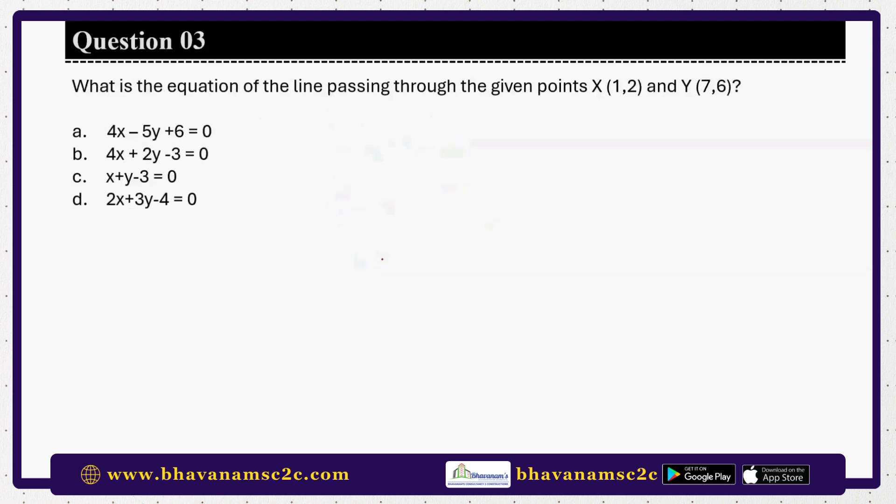Let's go to question number three. What is the equation of the line passing through the given points X, that is 1 comma 2, and Y, 7 comma 6? I will give you a tip for this question. If you don't know, you can go to handbook to search for the formula.